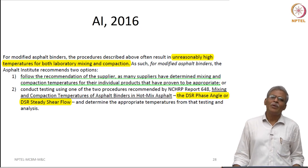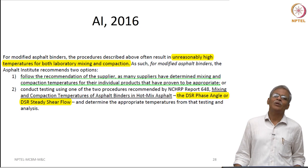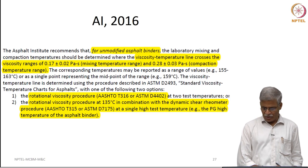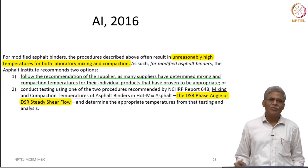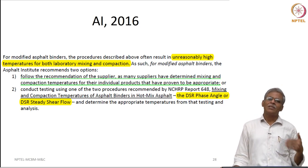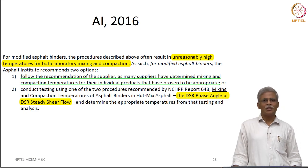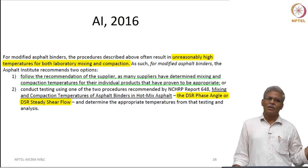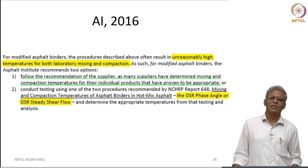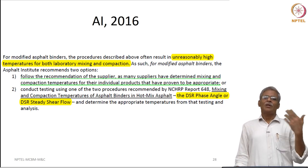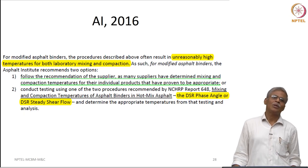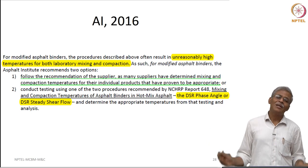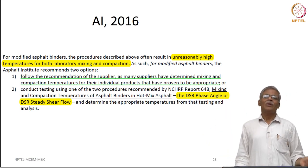Now what we really mean by unrealistic values: if you hold on to these concepts of equiviscous temperature and try to shoot for around 0.28 ± 0.03 Pascal seconds for the compaction temperature, since modified binders exhibit non-Newtonian response, it is going to be extremely difficult to find the temperature and associated shear rate at which one can record such viscosities. It has been found that for such complex modified binders — already discussed in a separate lecture by Dr. Nivitha — these temperatures can actually go to 190 or 200 degrees centigrade, in which case there can even be a degradation of the modifier that was added to provide enhanced performance.